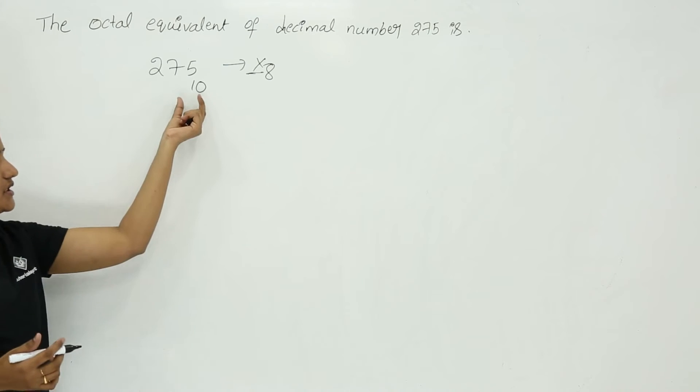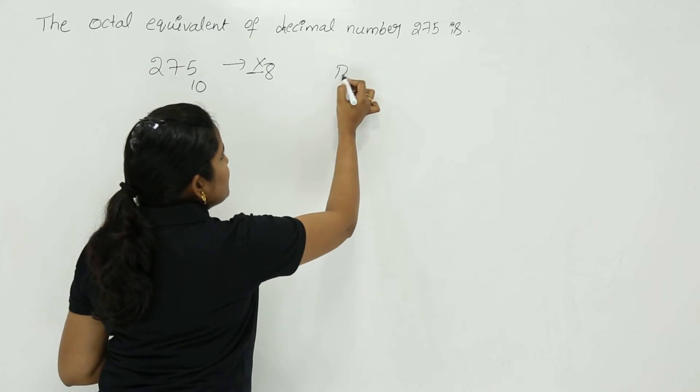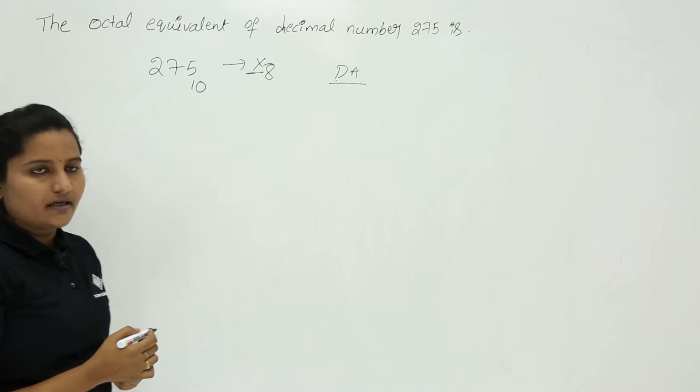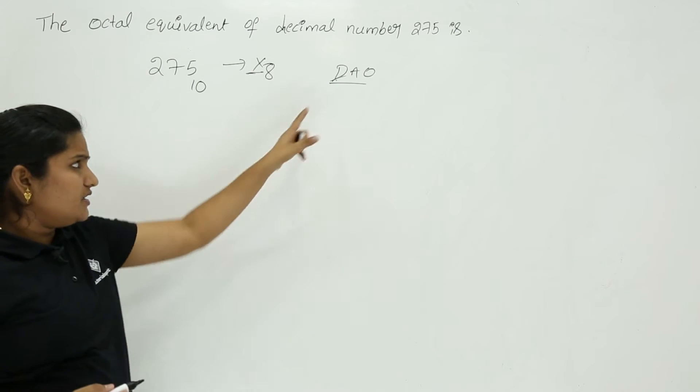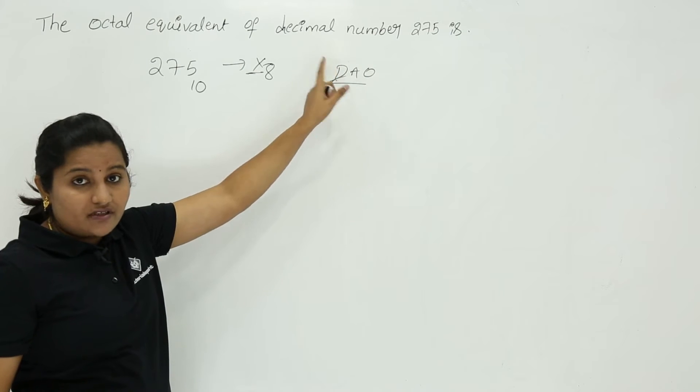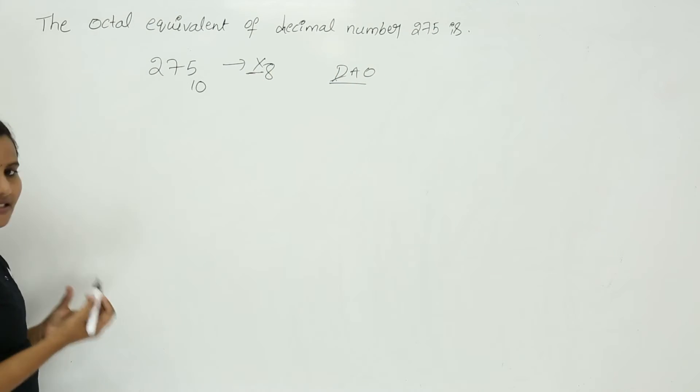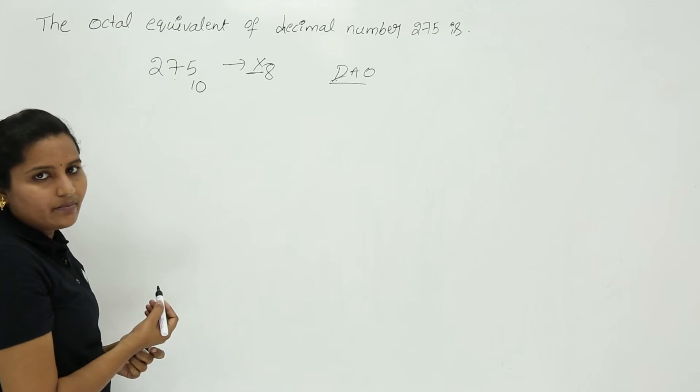The conversion here is decimal to any other. Decimal to any other means division is required. You just consider like DOA - when you are getting D first, remember this is division. That means successive division, successive division with respect to destination number system.